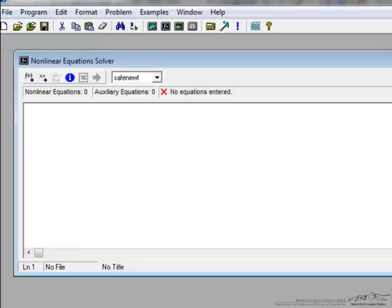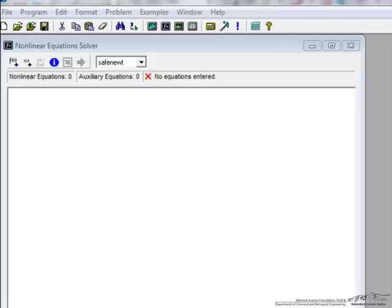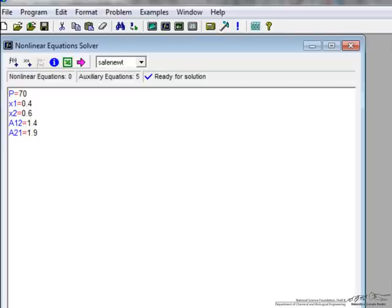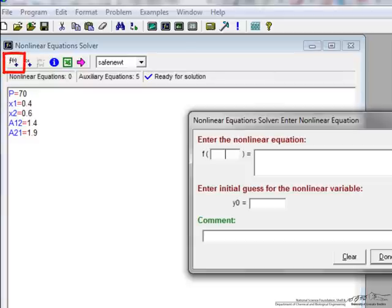So now we have opened the POLYMATH program, we will select program, select non-linear equations, and then first thing I will do is just copy the parameters, so just normal equations for the parameters, and so let's enter one of the equations. So if I select this, it is going to give me a way to enter the equation.